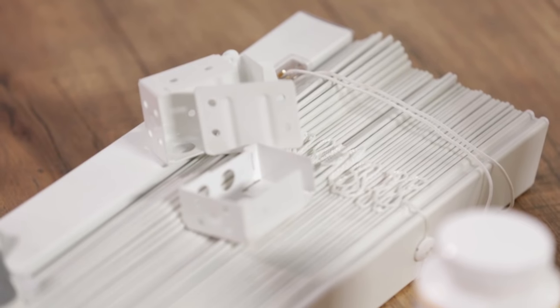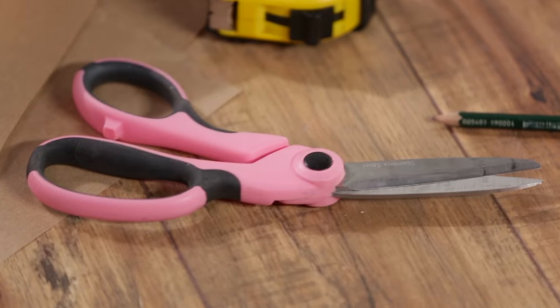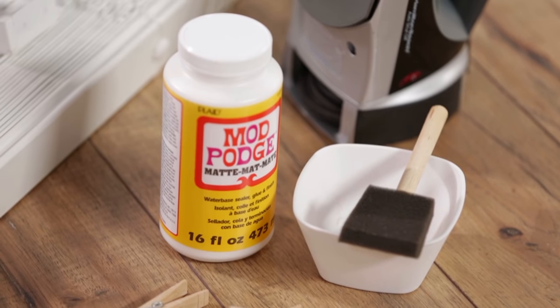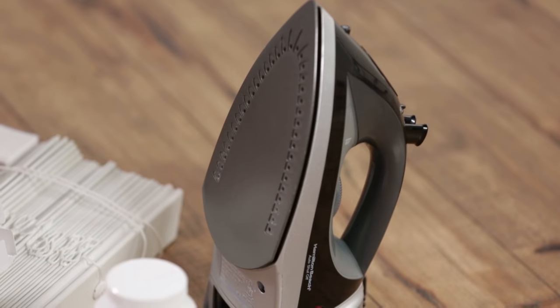You'll need white faux wood blinds, thick upholstery fabric, pencil, scissors, decoupage, bowl for decoupage, foam brush, clothespins, tape measure, and iron.